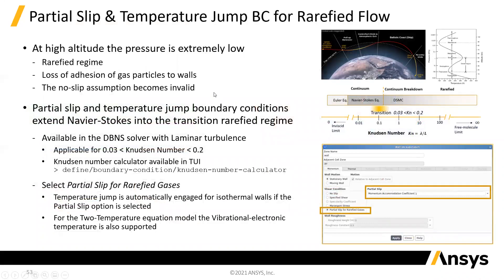There's the ability to have partial slip at walls and temperature jumps. This is when you're getting down into rarefied gases where you no longer have enough molecular collisions to behave as a continuum. With that, you can cover a significant section of the Knudsen number range with this new model.